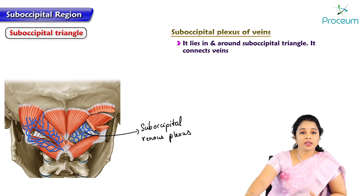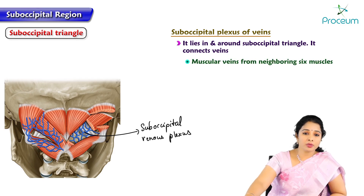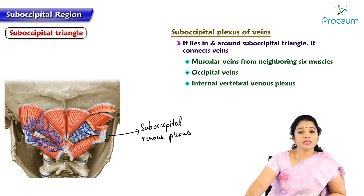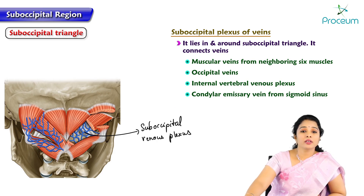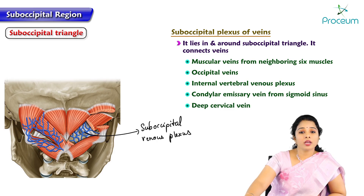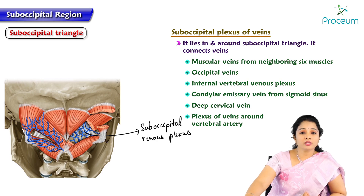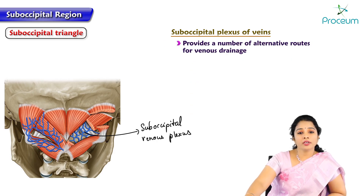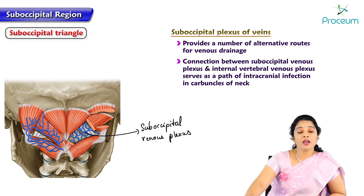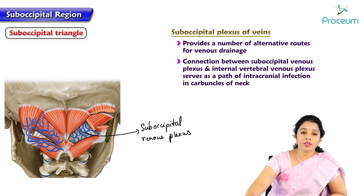The suboccipital venous plexus connects the muscular veins of neighboring muscles, occipital veins, internal vertebral venous plexus, condylar emissary veins from the sigmoid sinus, deep cervical vein, and the plexus of veins around the vertebral artery. Hence, this venous plexus provides a number of alternative routes for venous drainage. The connection between the suboccipital venous plexus and internal vertebral venous plexus serves as a path for intracranial infections in carbuncles of the neck.